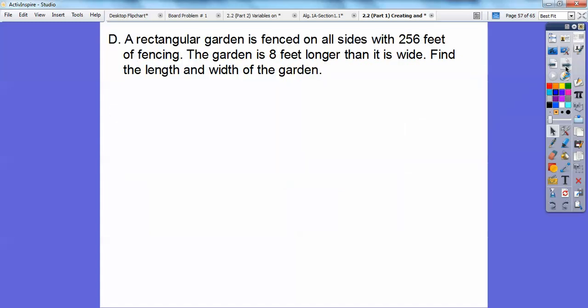All right, one more you guys. A rectangular garden is fenced in on all sides with 256 feet of fencing. The garden is eight feet longer than it is wide. Find the length and the width of the garden. Here's our garden, it's a rectangle. So this is our W is wide right here. The garden is eight feet longer. So W plus 8. And then it says all the way around we used 256 feet of fencing. So if this is W, this is going to be W. If this is W plus 8, this is going to be W plus 8. So let's go ahead and so this 2W represents this W and this W. This two times W plus 8 represents this W plus 8 and this one. There's two of them right there.